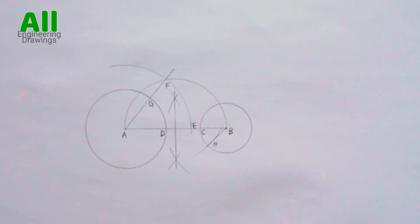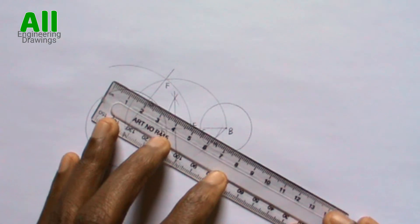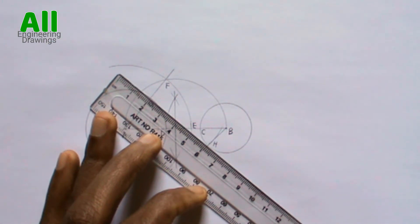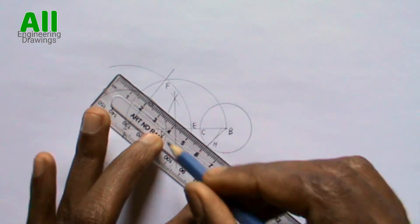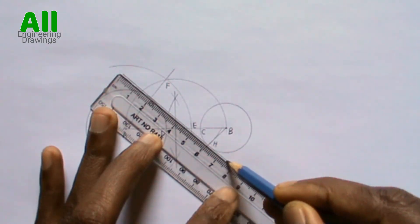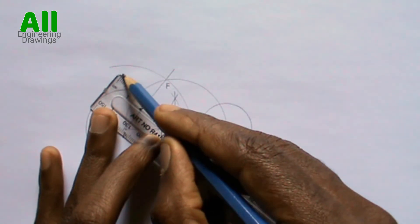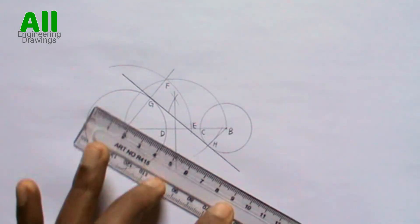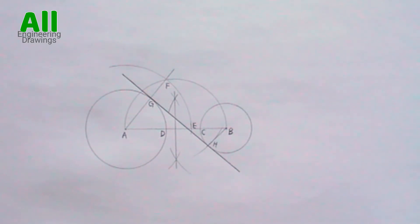Now draw a line passing through point G and point H, which is the internal tangent.